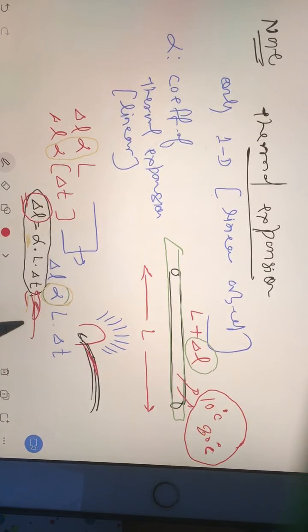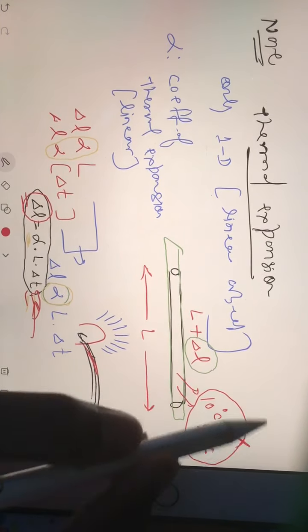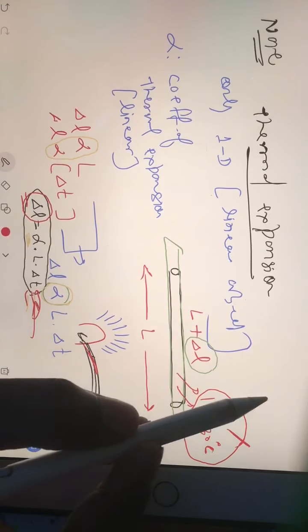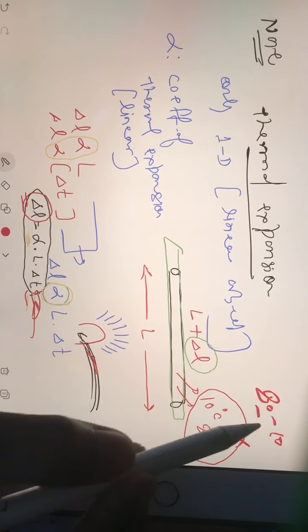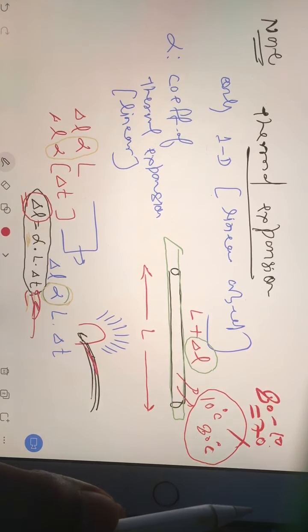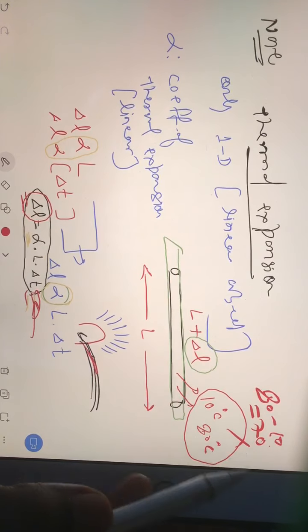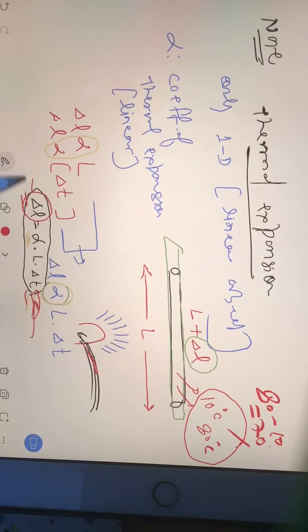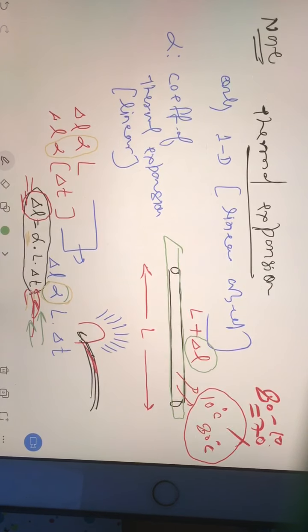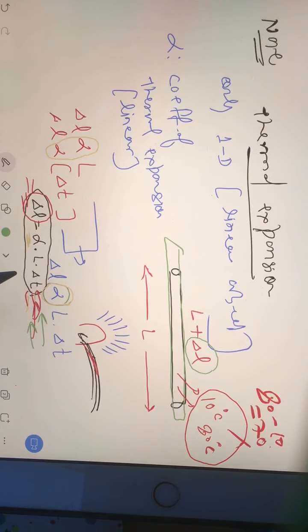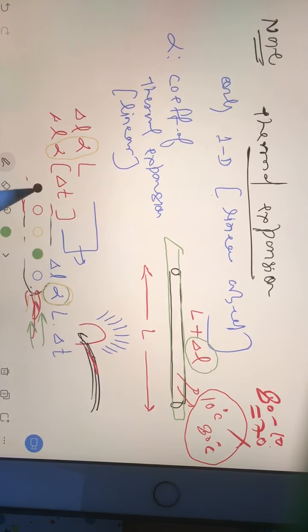you substitute here at 70 degrees because you changed from 10 to 80, which means 80 minus 10, which is nothing but 70. So then you can find out your change in length. And you can see this equation itself is giving you a direct idea to find out thermal strain. How? Very easy.